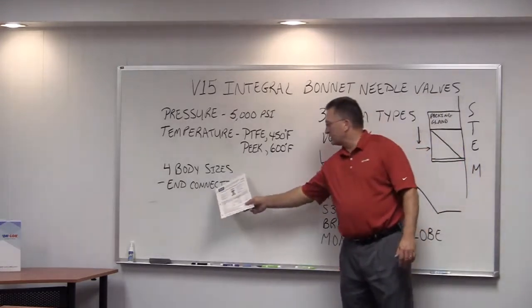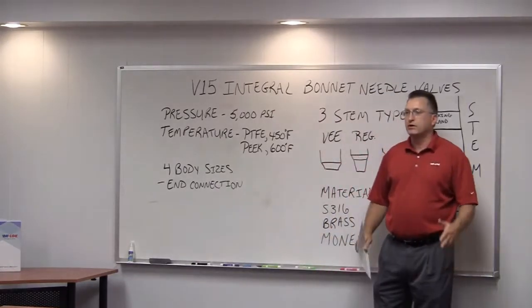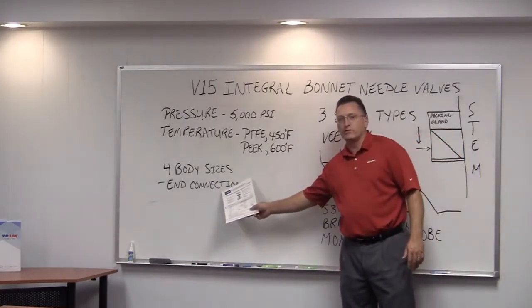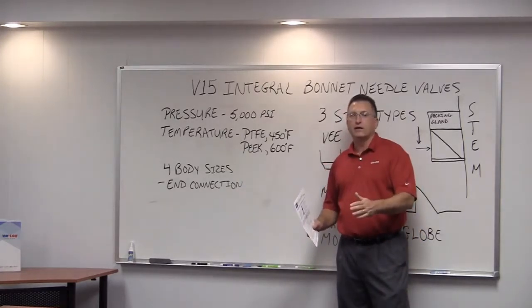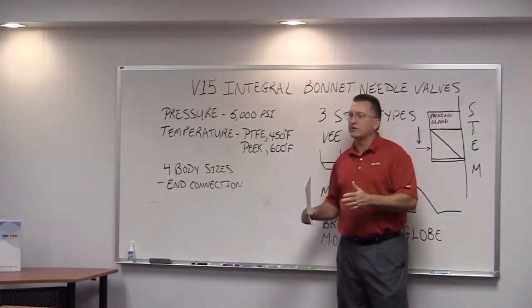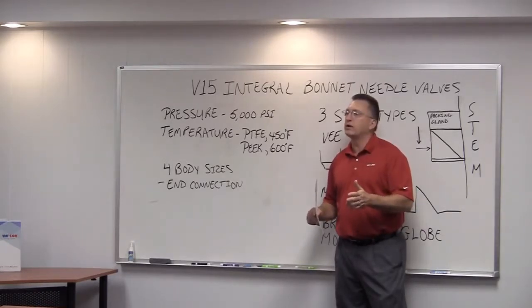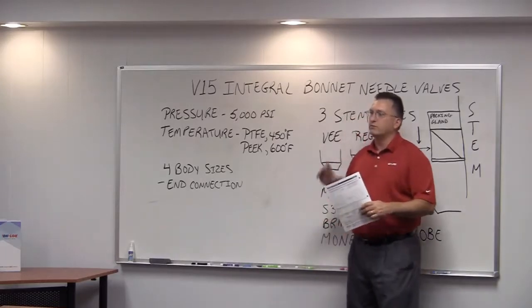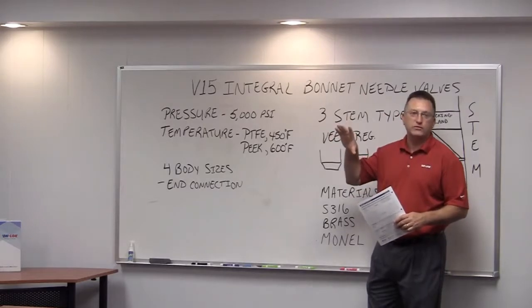There are four body sizes in this needle valve product, and they are pretty much determined by the type of end connection on the valve. To make a quarter inch male thread, it doesn't take the same size body that it takes for a female thread. Because pipe sizes are called out by inside diameter instead of outside diameter the way tubing connections are called out. So, the required forging size to create a female pipe thread is much larger than a male pipe thread forging size.